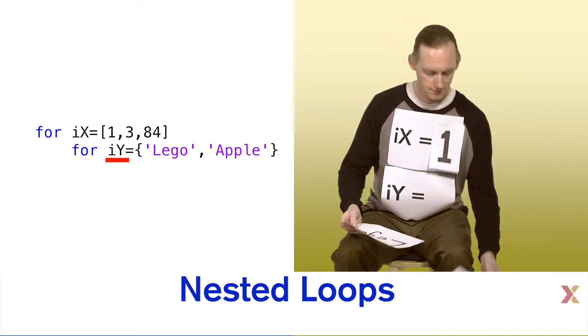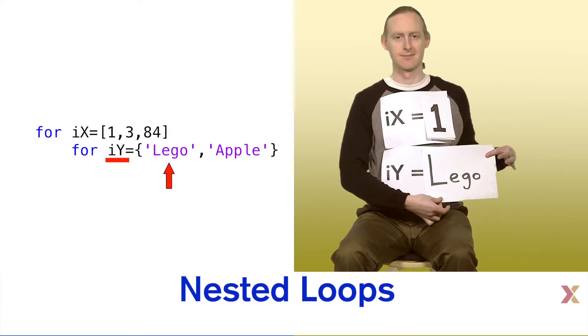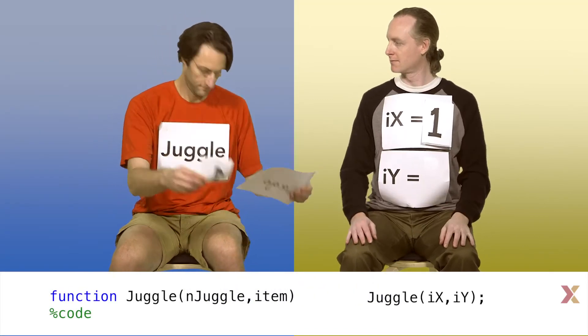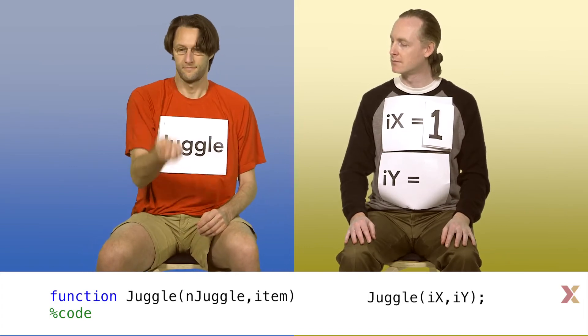The first time through the loop, the cell has the array of characters lego. Now the code calls for a function that takes two variables and does something. Our function juggles one lego brick.